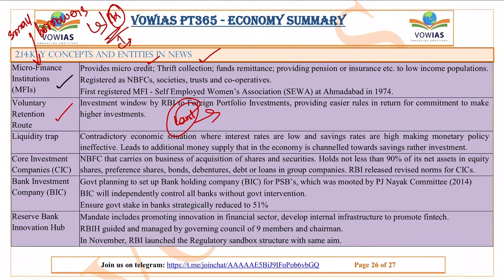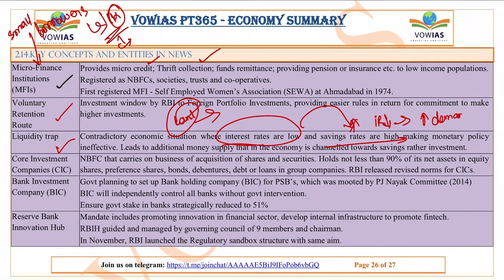The Liquidity Trap refers to a situation where people save more even when interest rates are low. Normally, the RBI reduces interest rates when demand in the economy is low, expecting that lower rates will encourage borrowing and spending. But in a liquidity trap, even with low interest rates, people do not take loans because they distrust the economy and instead prefer to save as a precaution against uncertainty.